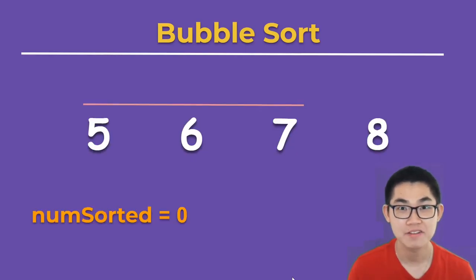What if the array is already sorted? We put b at 5. 5 is not larger than 6, so we don't swap them. But b still moves up. 6 is not larger than 7, so we don't swap them. But b still moves up.